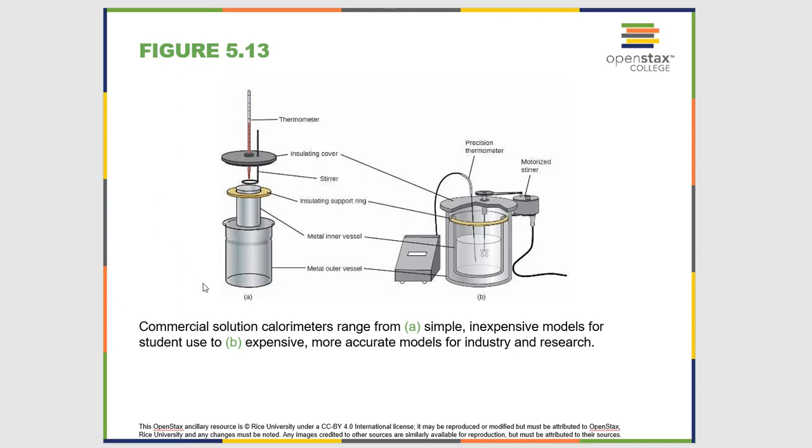But what we do is we take this entire bomb, which is going to contain our M&M and high pressure oxygen, and we submerge it into this water bath with a stirring motor and a precision thermometer. Then we burn the food and we look at the temperature change of the calorimeter. The increase in temperature of the calorimeter comes from the food.